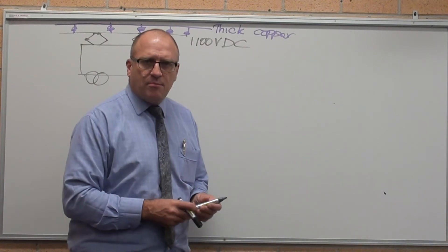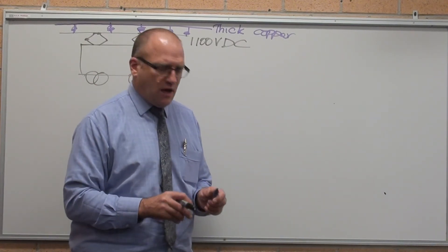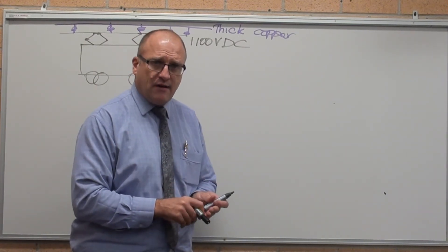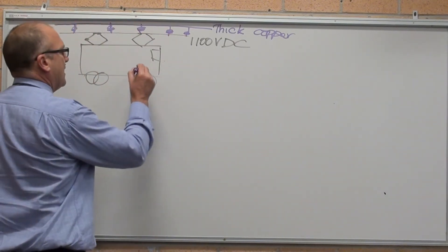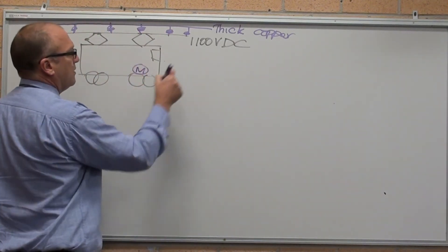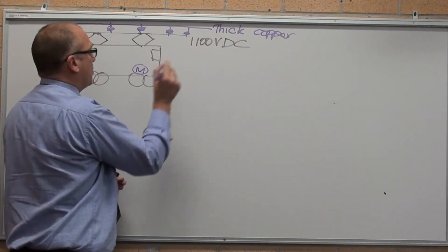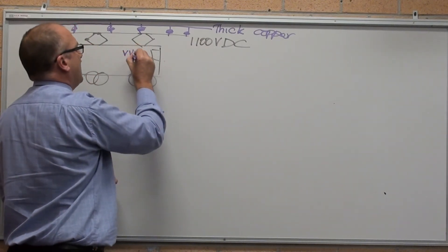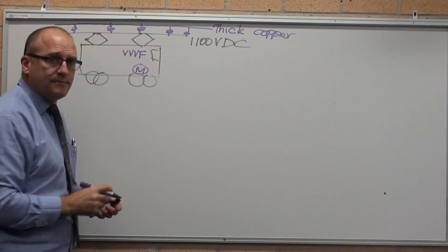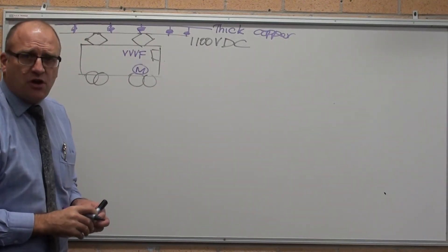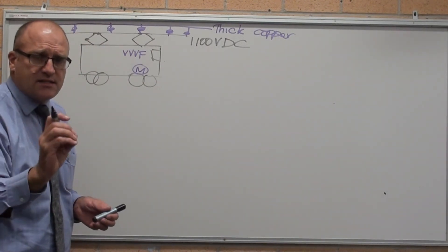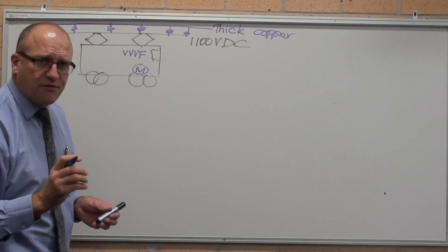The millennium trains, I'm led to believe, don't run on DC. They run on AC, so the motors are AC. The voltage supply is still DC, and in here you've got a controller, a VVVF controller that converts the DC current to AC to drive the motor.